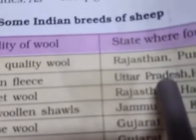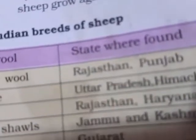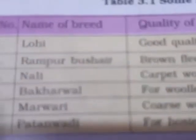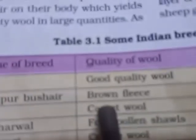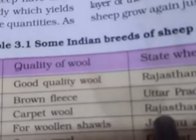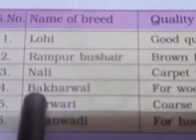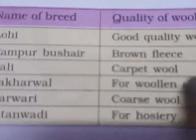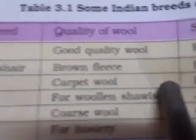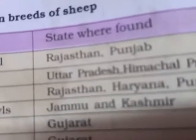Lohi gives good quality wool and is mostly found in Rajasthan and Punjab, in the plains of India. Rampur Bushair has brown fleece and is mainly found in Uttar Pradesh and Himachal Pradesh. Nali produces carpet wool — wool whose quality resembles carpet — and is found in Rajasthan, Haryana, and Punjab, again in the plains of India.